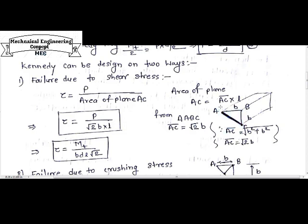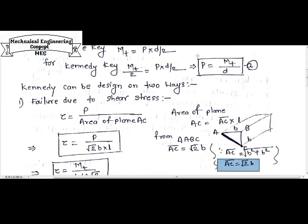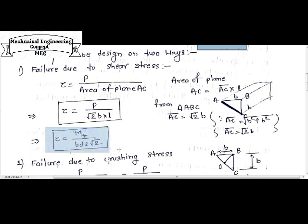So how we can calculate this length AC which is resisting the shear stress? We know that the key has same width and height, means B is equal to H. So here I am assuming this base as B and this height as B. Applying Pythagoras theorem, AC will come out as square root of B squared plus B squared, which is finally resulted as AC is equal to root 2 B. And this area will be root 2 B into L. Putting this equation and value of load in this condition, we achieve tau is equal to MT divided by BDL root 2.